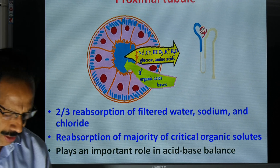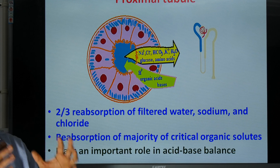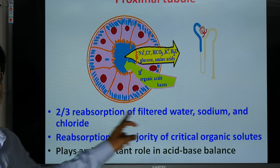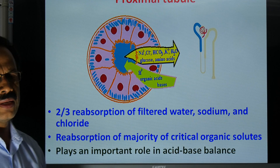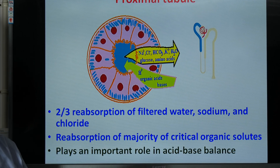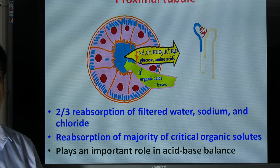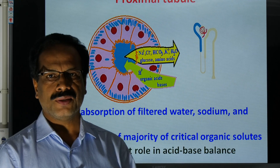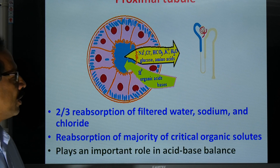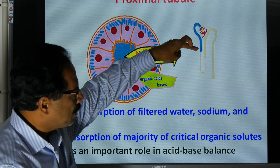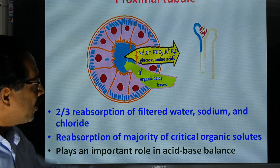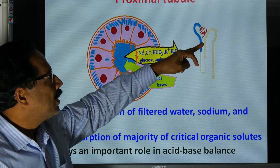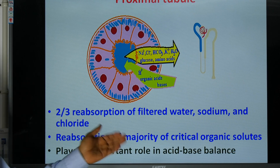The proximal convoluted tubule is the area of major acid-base control of the body system. This area plays a major part in acid-base balance and control. Also, the early part of the proximal convoluted tubule is slightly different from the distal part of the proximal convoluted tubule, which we will see in the next slide.